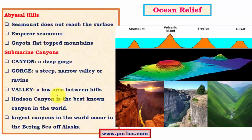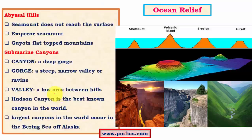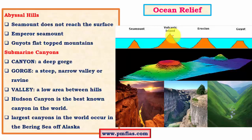We have talked about abyssal plains and seamounts which do not reach the surface. We can see various abyssal hills — volcanic islands are also examples of abyssal hills. Then we have seamounts which do not reach the surface, and guyots which have a flat top.